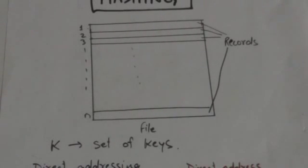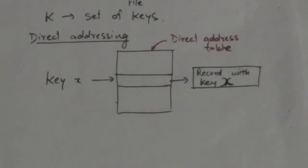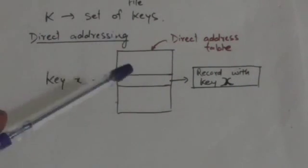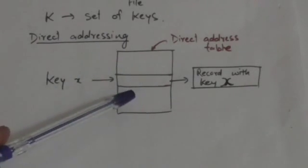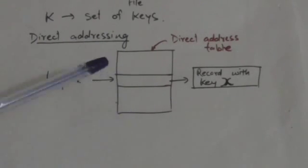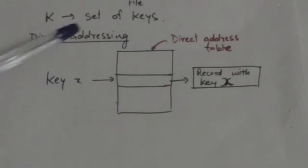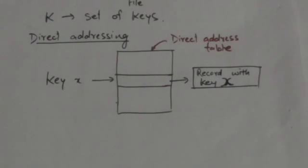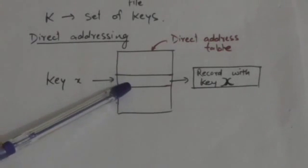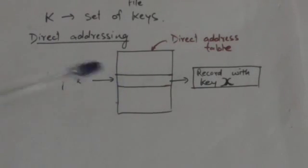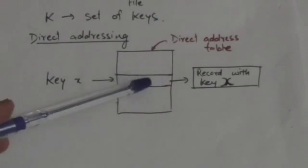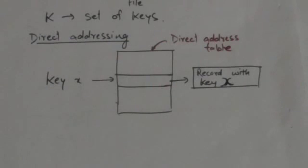One simple searching technique is direct addressing. In direct addressing, a direct address table is maintained, which is an array in which each slot corresponds to a key of the key set. The slot X which corresponds to key X points to the record whose key is X.